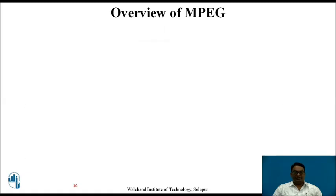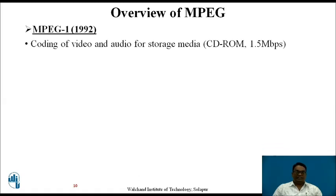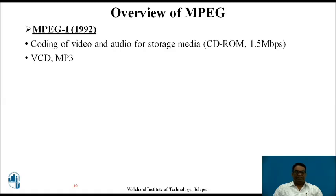Overview of MPEG: MPEG 1 was established in 1992. It is generally used for coding of video and audio for storage media, which includes CD-ROM. The data rate for coding of video and audio is 1.5 Mbps. Examples are VCD and MP3.